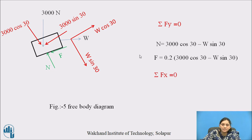Summation of Fx equals zero, that is the second equation we will use now. In the X direction there are forces 3000 sin 30, W cos 30, and F. So W cos 30 minus 3000 sin 30 minus F equals zero.